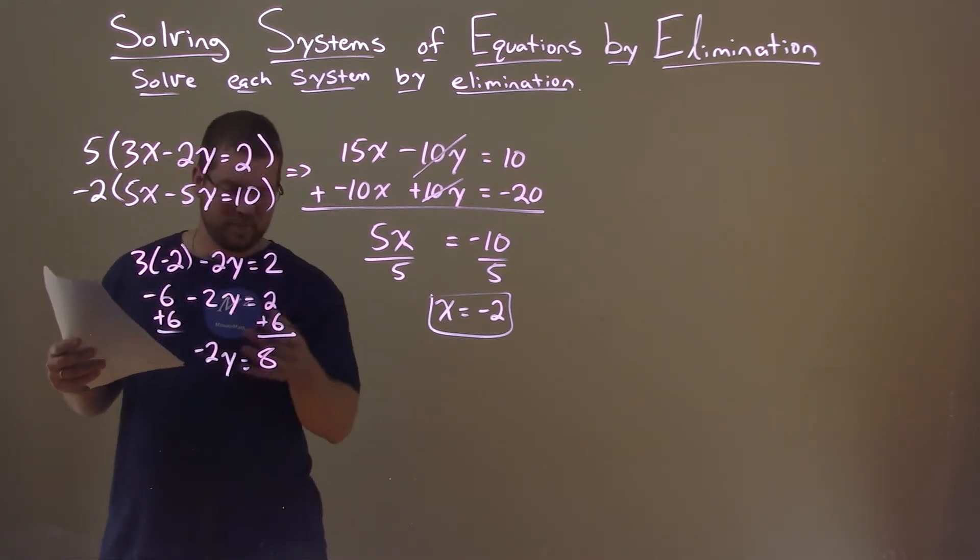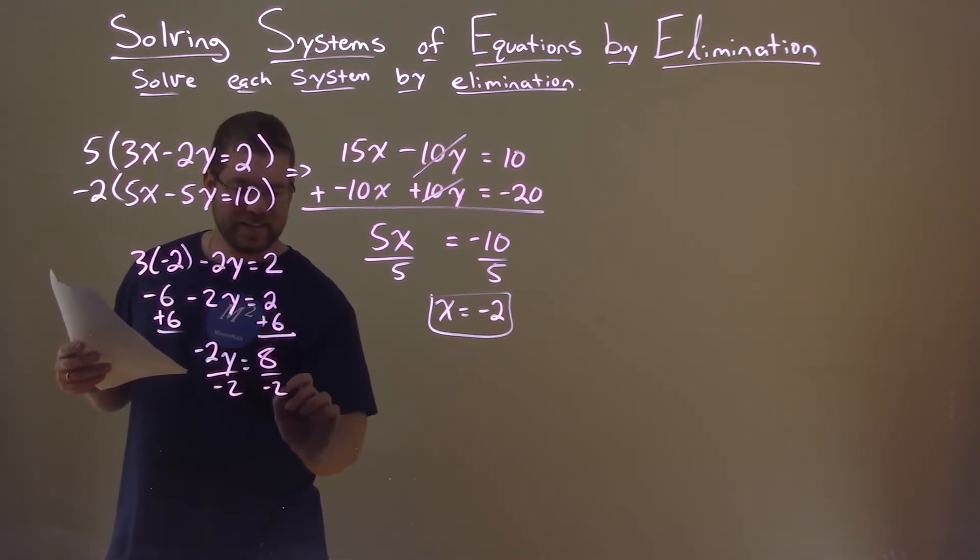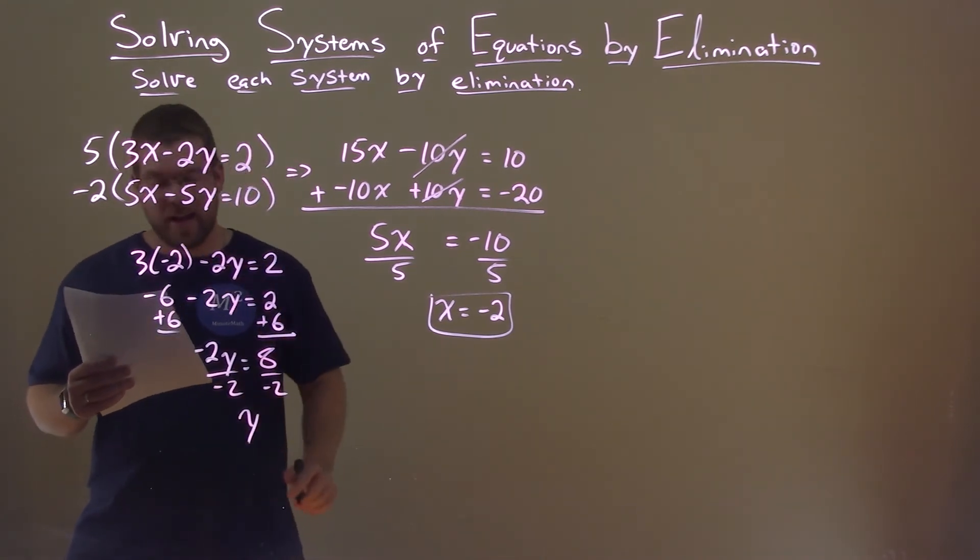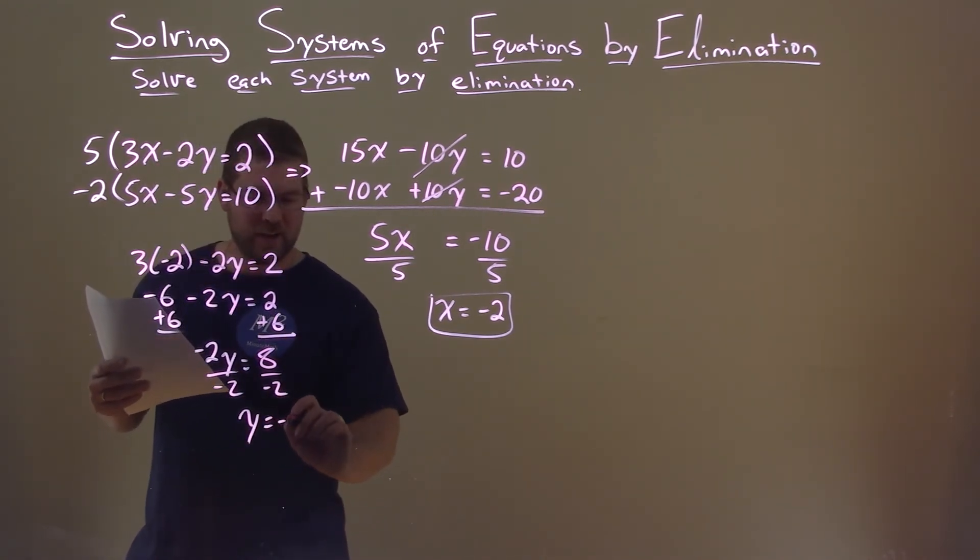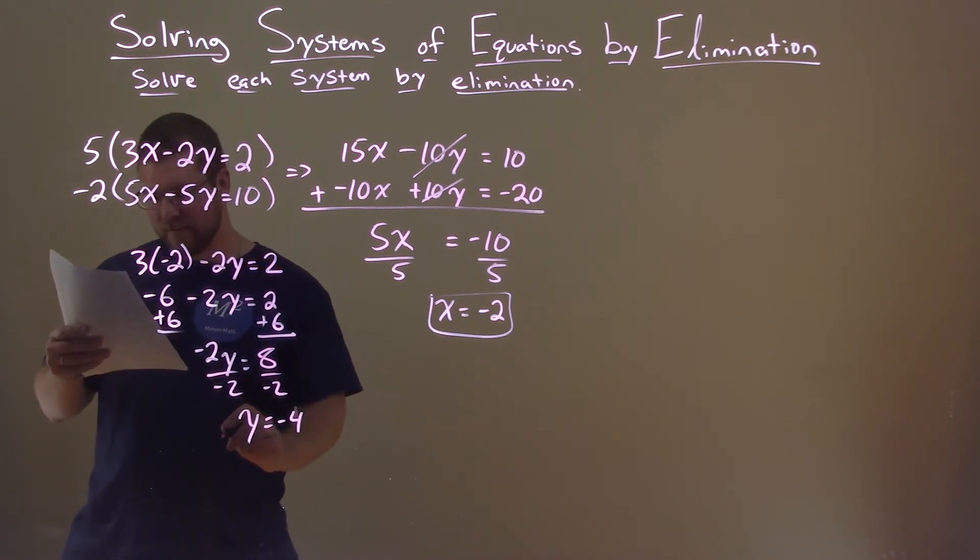Divide by negative 2 on both sides. We got y by itself. 8 divided by negative 2 is negative 4. So y is negative 4 here.